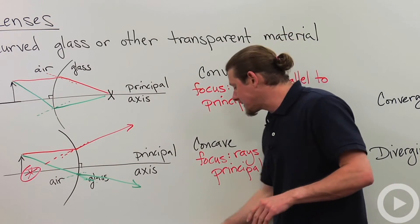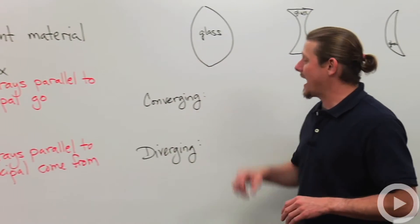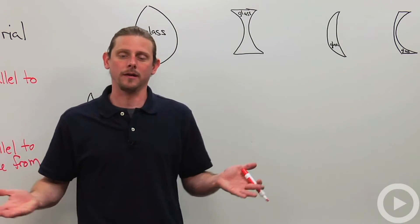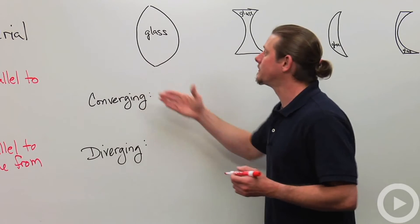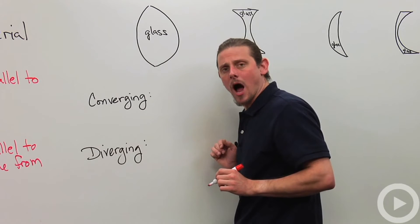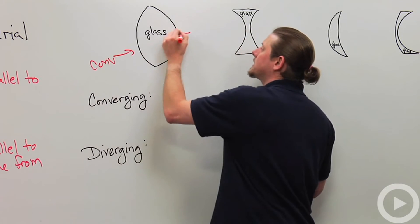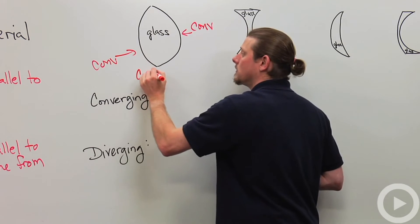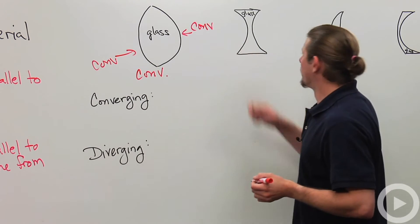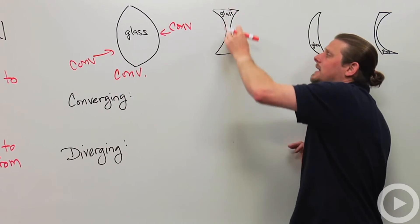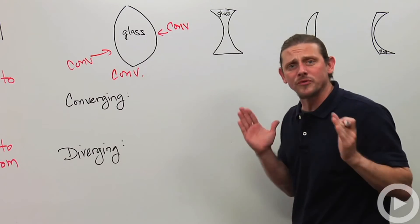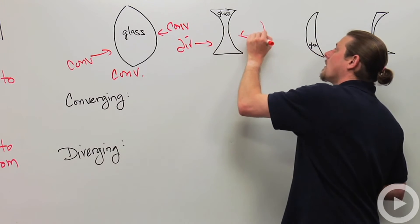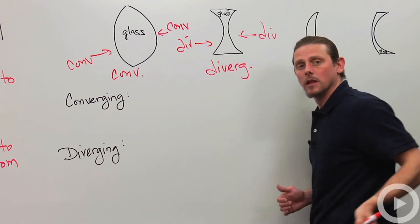Now let's consider real lenses, which have two sides. If the glass is convex on both sides, then both sides are converging, and therefore this glass will be a converging lens. If it's concave on both sides, both sides are diverging, so this is a diverging lens.